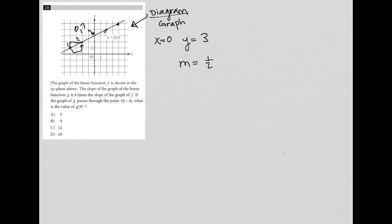Now the question says that the slope of g—so this is for f over here—the slope of g is equal to 4 times the slope of graph f. So the slope of g is equal to 4 times 1/2, which is equal to 2.